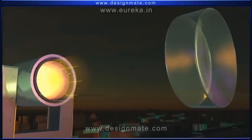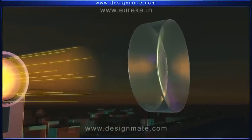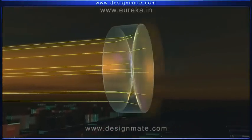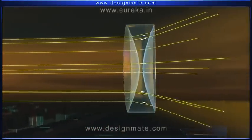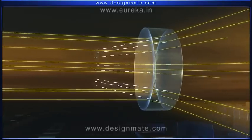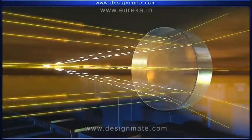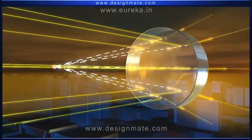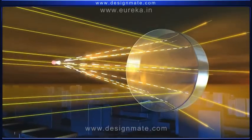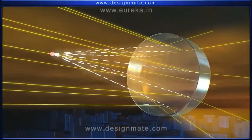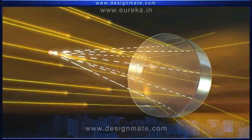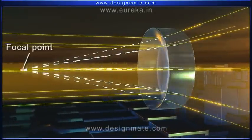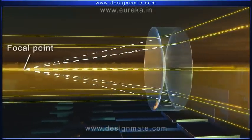The parallel rays of light incident on the concave lens undergo divergence as they emerge on the other side. If the divergent rays are extended backwards, they appear to meet at one point on the principal axis on the same side of the object. This point is called the focal point of the concave lens.